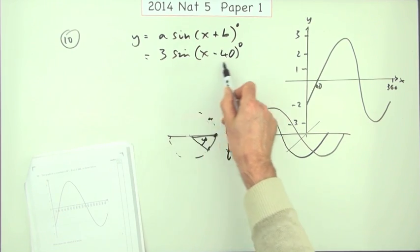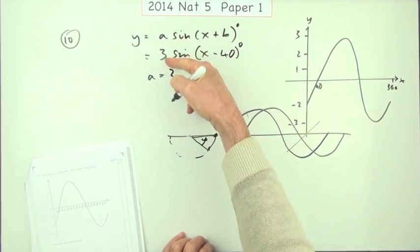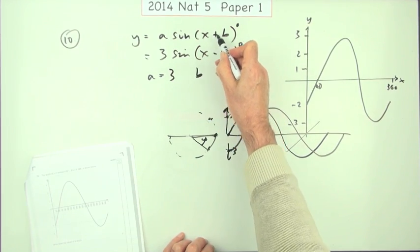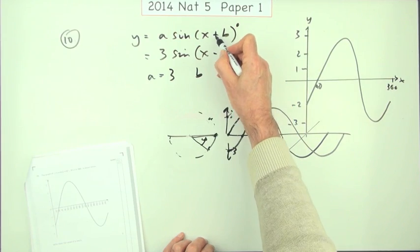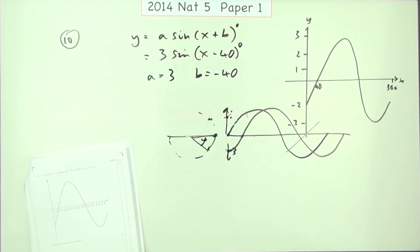Anyway, it didn't say write this down, it says state the values, so you'd have to be careful. Well, a is 3, certainly, but b isn't 40, because it says plus b. If it said minus b, b would be 40, but since it says plus b, b is going to have to be minus 40. And those are the two marks, one for that, and one for that.